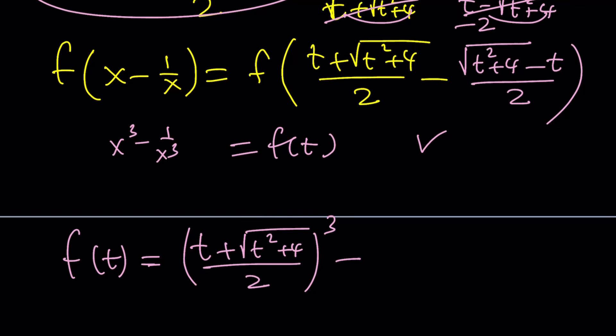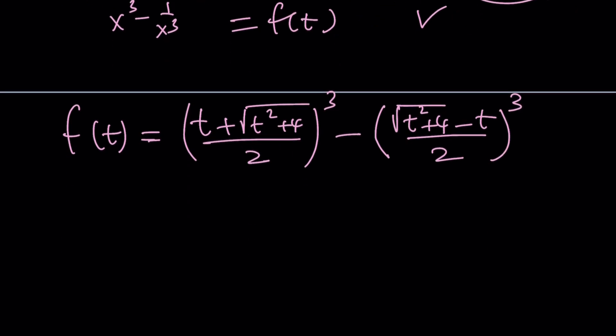And remember, 1 over x is this, right? So, we're just going to cube it and subtract it. Great. So, now we have difference of 2 cubes, which is obviously factorable. You can just go ahead and factor it, right?